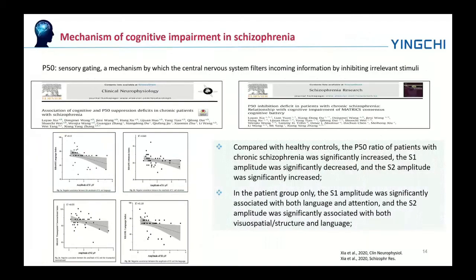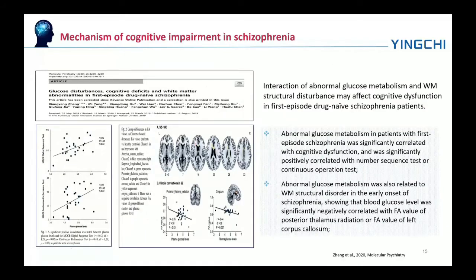Compared with healthy controls, the P50 ratio of patients with chronic schizophrenia was significantly increased, the S1 amplitude was significantly decreased, and the S2 amplitude was significantly increased. In the patient group only, the S1 amplitude was significantly associated with both language and attention, and the S2 amplitude was significantly associated with both visuospatial and language functions. The interaction of abnormal glucose metabolism and white matter structural disturbance may affect cognitive dysfunction in first-episode drug-naive schizophrenia patients.